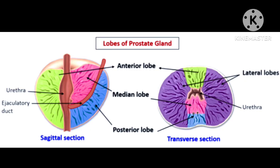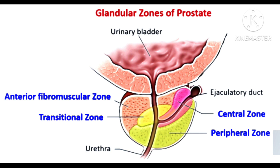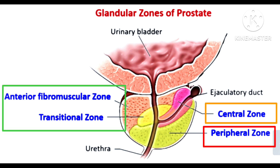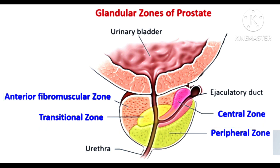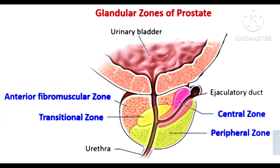Traditionally, the prostate is divided into four anatomical lobes. However, more important clinically is the histological division of the prostate into three zones: the central zone, the transitional zone, and the peripheral zone. The central zone usually comprises the anterior fibromuscular zone, which is devoid of glandular components. The transitional zone is located centrally and surrounds the urethra.